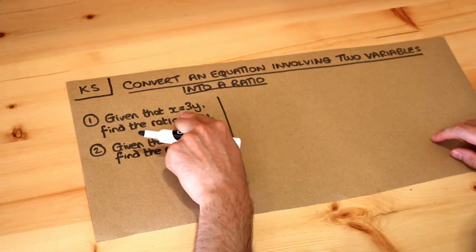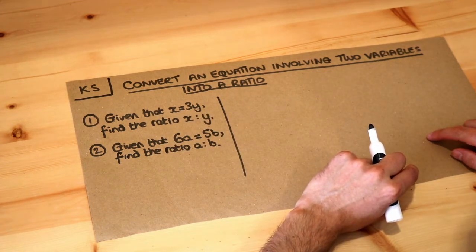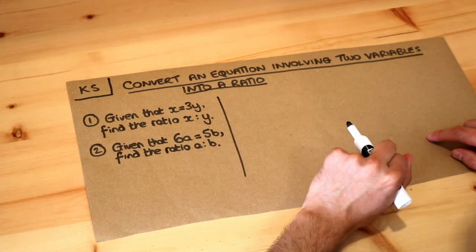So let's read the first question. Given that x is equal to 3y, find the ratio of x to y. So what's the relative size of x and y?